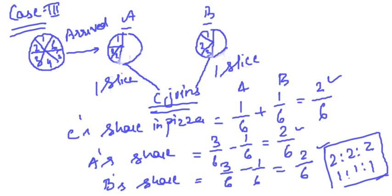This is Case 3. Case 3 says that the new partner acquires some part of his share from one partner and some part from another partner. C is the new partner — he takes one slice of profit from A and one slice of profit from B. Joining the two slices becomes C's share. A had three slices; one given to C, so two slices remain. Same with B: three slices minus one given to C equals two slices remaining.